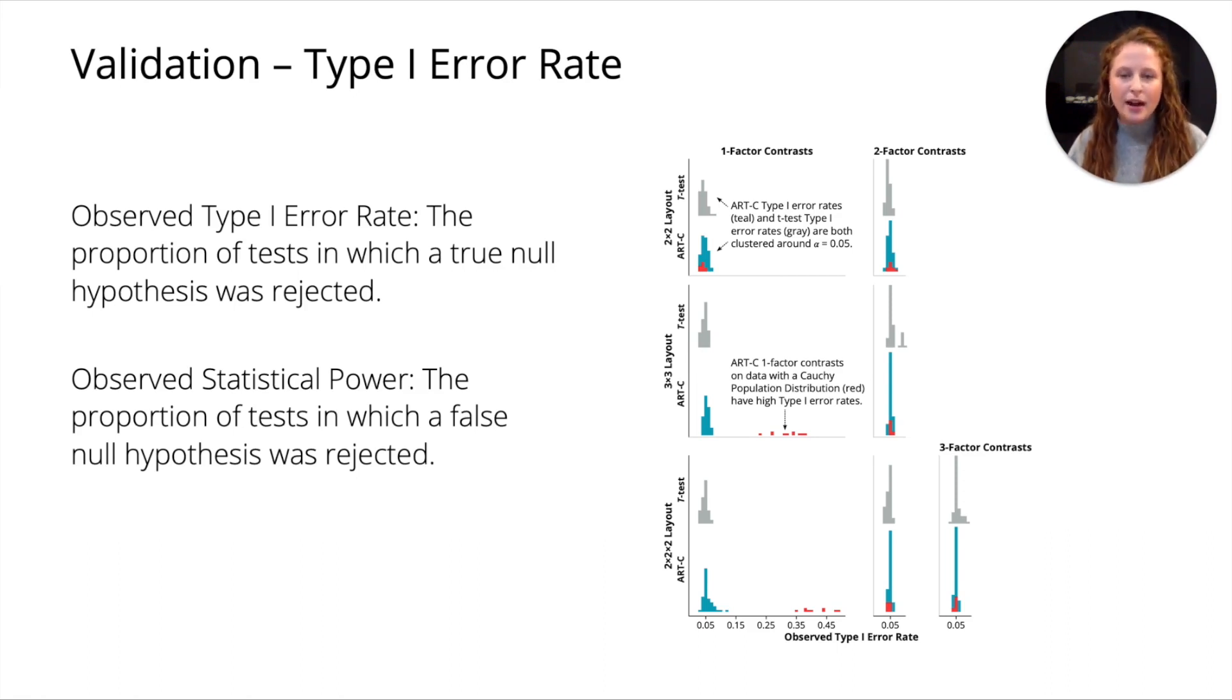Observed type 1 error rate is defined as the proportion of tests in which a true null hypothesis was rejected. We have a significance level alpha, and alpha is used as a threshold for whether or not to reject a null hypothesis. We use alpha equals 0.05 all the time. When p is less than 0.05, we reject a null hypothesis. The observed type 1 error rate is just the proportion of tests in which the null hypothesis was rejected for a specific significance level over all the number of tests that were conducted. We want the observed type 1 error rate to be close to alpha, so we want that ratio to be close to 0.05.